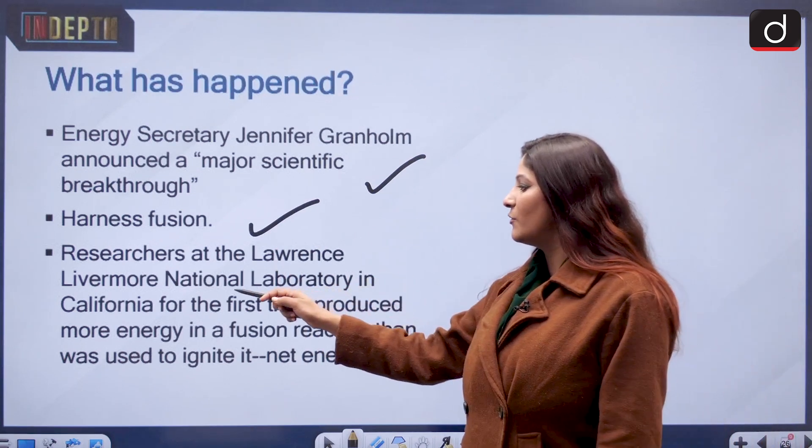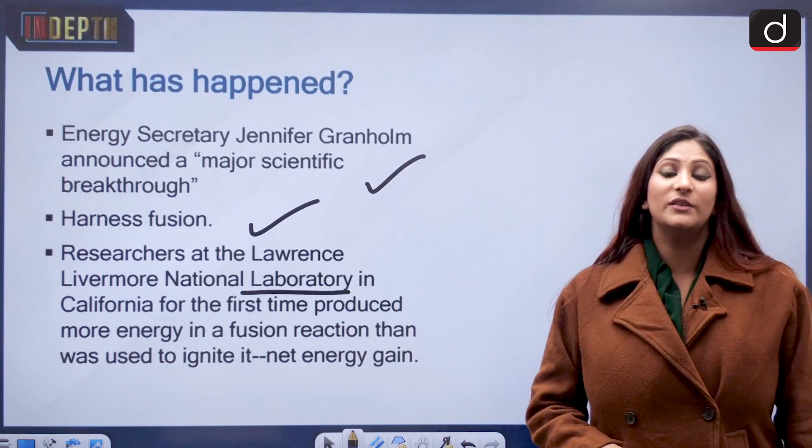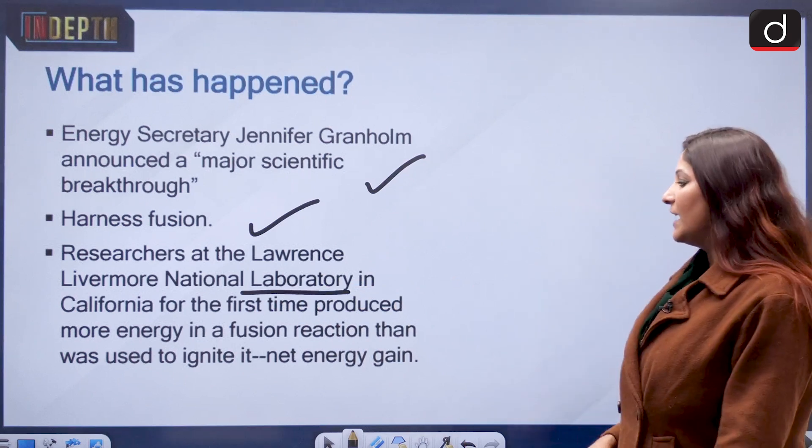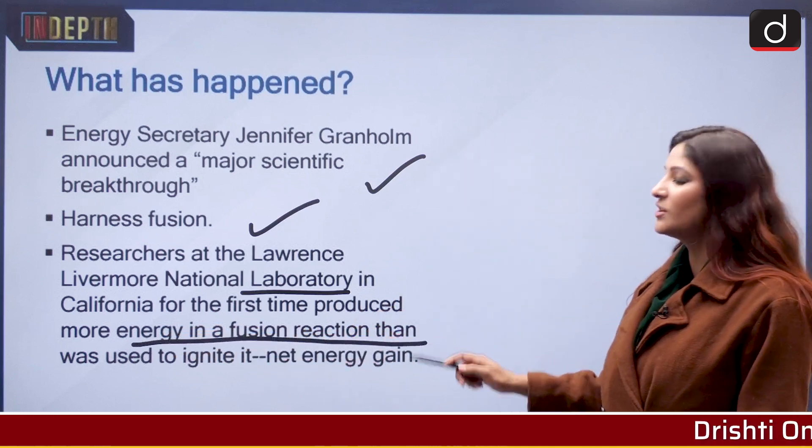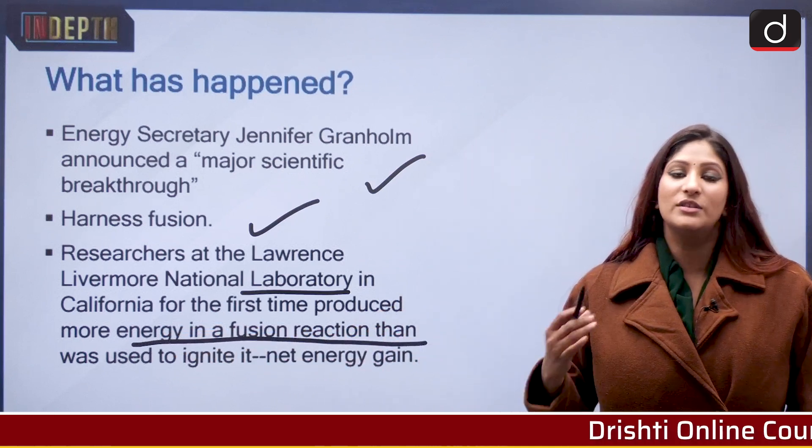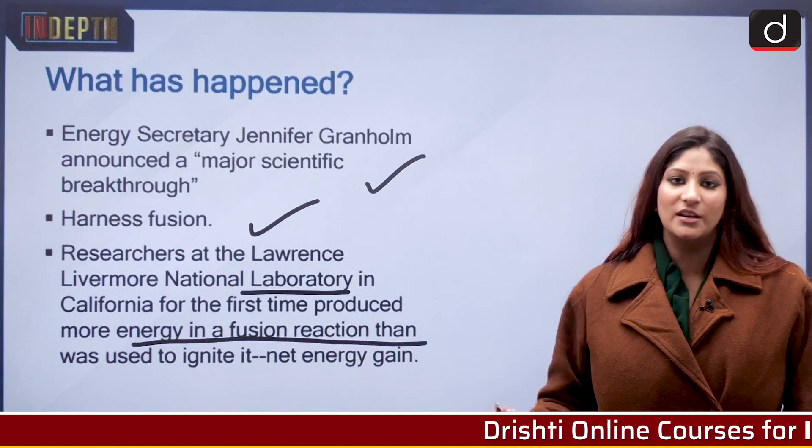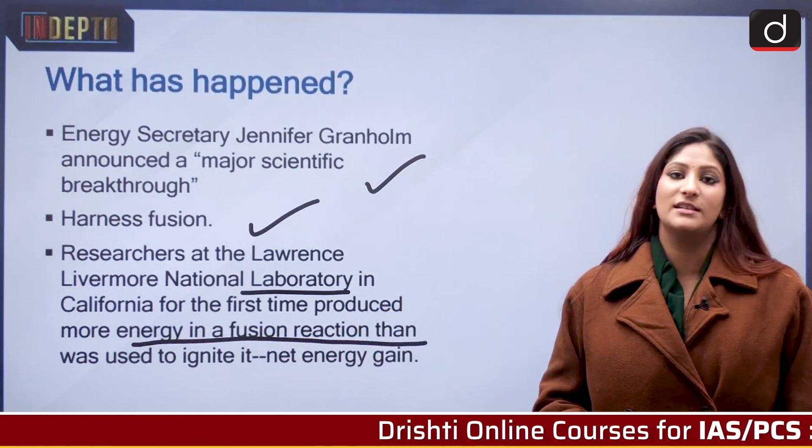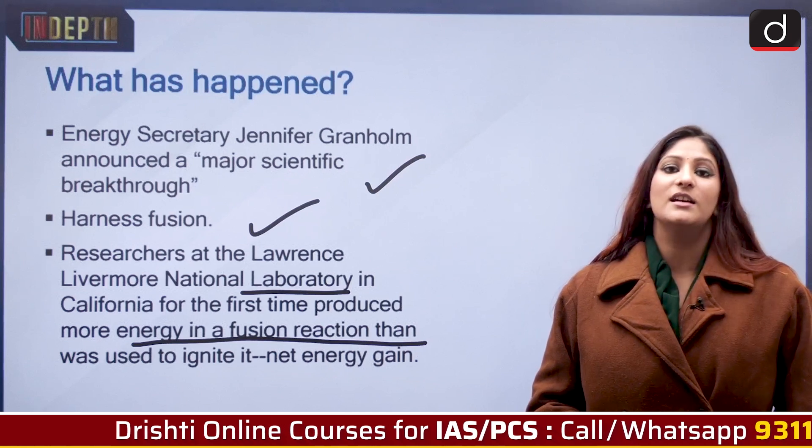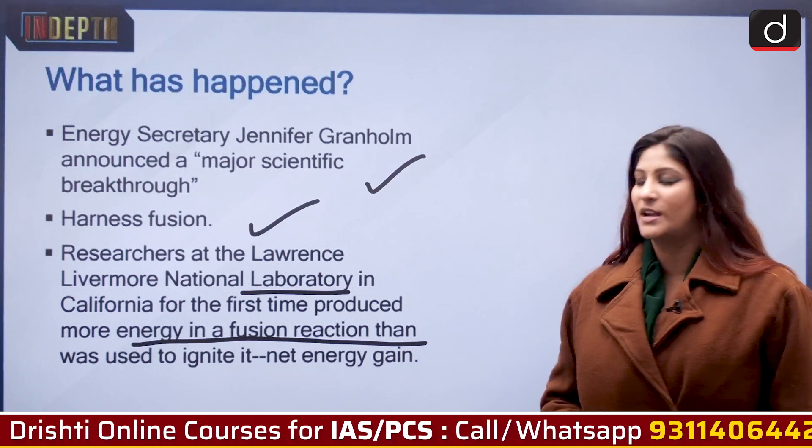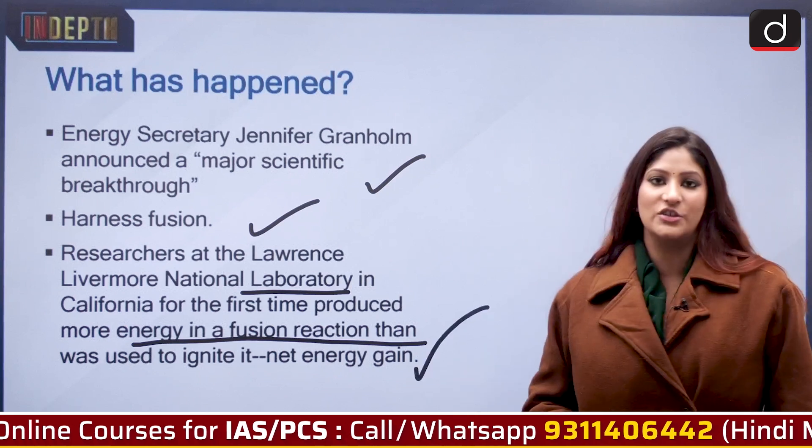Researchers at the Lawrence Livermore National Laboratory have said that it is for the first time ever that energy has been produced in such an amount that it has outdone the energy used to ignite the entire process. That means more output was received in exchange of less input, and this is known as net energy gain.